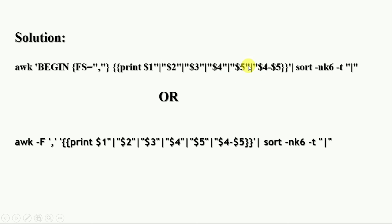At the end of the print statement, we calculate profit by subtracting the fifth field from the fourth field ($4 - $5), giving us the sixth field — store profit. Finally, we pipe the output to the sort command using options -nk6: -n for numerical sorting and -k6 to sort on the sixth field (store profit) in ascending order. We also use -t with the pipe symbol as the delimiter. This completes the solution.